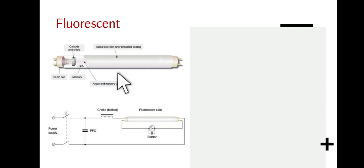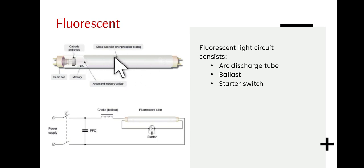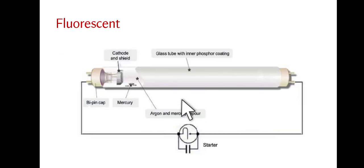A typical fluorescent light circuit consists of an arc discharge tube, a ballast, and a starter switch. The discharge tube has an internal phosphor coating and contains argon gas with a small amount of mercury. At the end of each discharge tube are electrodes known as cathodes.